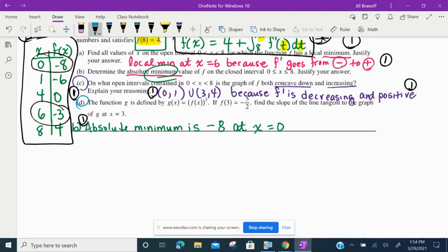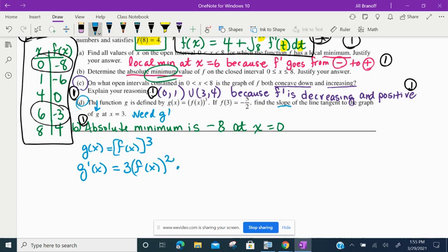The function G is defined by G of X equals F of X quantity cubed. And then we know that F of 3 is negative 5 halves. So we're supposed to find the slope of the line tangent to the graph of G at X equals 3. If I'm looking for the slope of the line tangent to the graph of G, then that means I need G prime. So G of X is F of X quantity cubed. So G prime of X. This is a chain rule. The outer function is the cubing function. So 3 times F of X quantity squared times the derivative of the inside function. So that's times F prime of X.